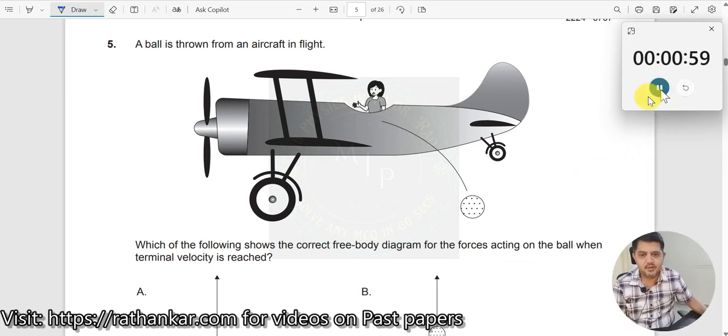Question number 5. A ball is thrown from an aircraft in flight. Which of the following shows the correct free body diagram for the forces acting on the ball when terminal velocity is reached?